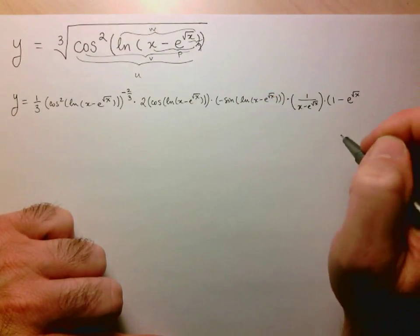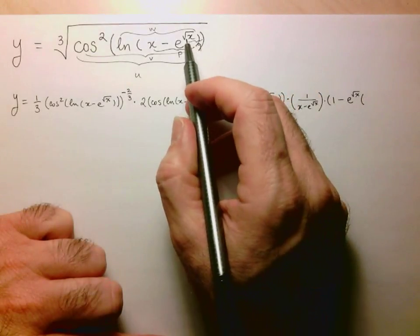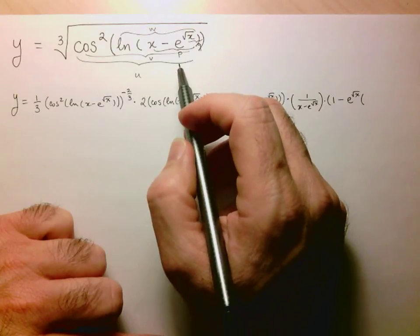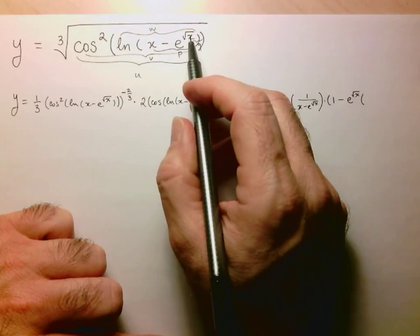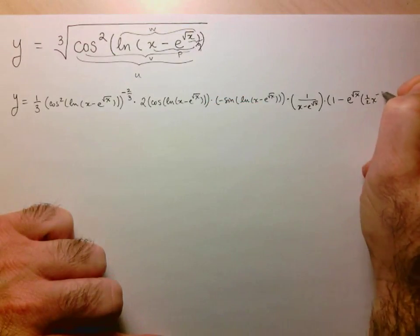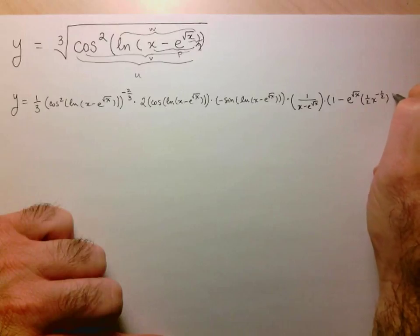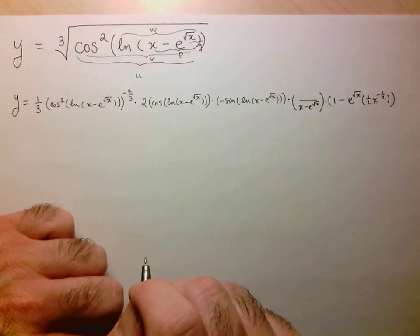The derivative of e to the q is just e to the q, so e to the √x. Finally, I think I'm taking my last derivative. I multiply by the derivative of √x, which of course is just x to the 1/2, so that's just 1/2 x to the minus 1/2. Make sure all your brackets are closed off, and so here we have it.